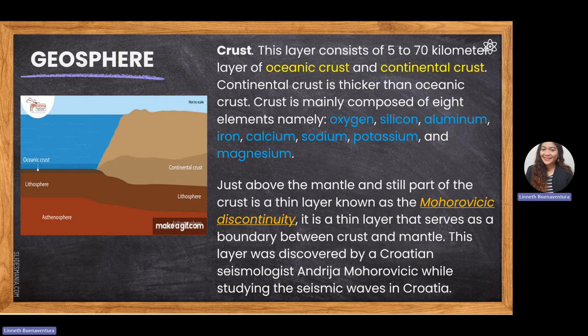The first layer is the crust, which extends from 5 to 70 kilometers. The lithosphere consists of the oceanic crust and continental crust. The oceanic crust lies beneath the ocean floors and is about 5 to 10 kilometers thick. The continental crust makes up the continents and is about 15 to 70 kilometers thick. When oceanic and continental crust meet, the oceanic crust subducts, creating trenches, while the continental crust produces volcanoes.